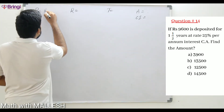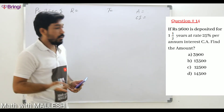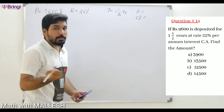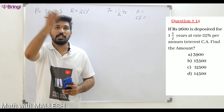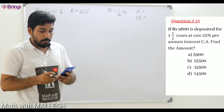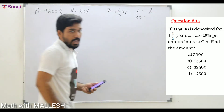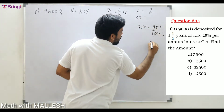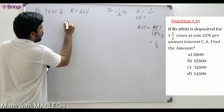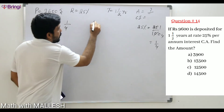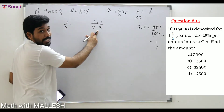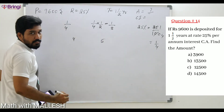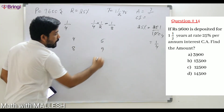Question number 14: If 9600 rupees is deposited for one and a half years at the rate of interest 25% per annum compounded annually, find the amount. 25% = 1/4. For the first full year: 1/4, and for the second half year: 1/4 × 1/2 = 1/8. So for 1/4: 4 is principal, 5 is amount. For 1/8: 8 is principal, 9 is amount.